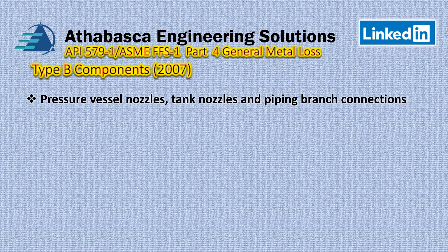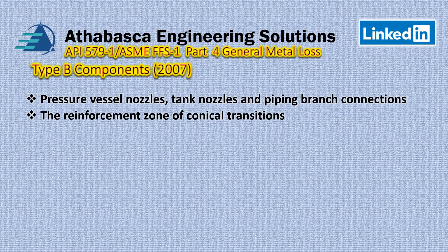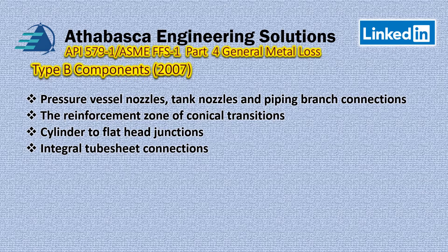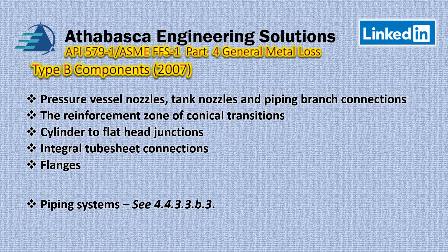Type B is the largest group. It includes pressure vessel and tank nozzles, piping branch connections, the reinforcement zone on conical transitions, cylindrical to flat head joints, integral tube sheet connections, and flanges — which are very commonly analyzed. You can see how specific these definitions are, which is very helpful when you're doing an analysis.